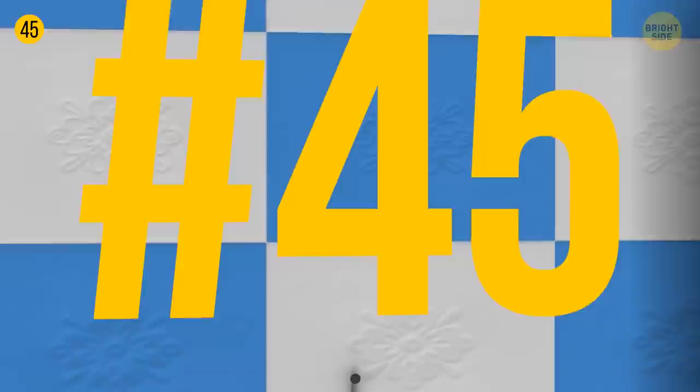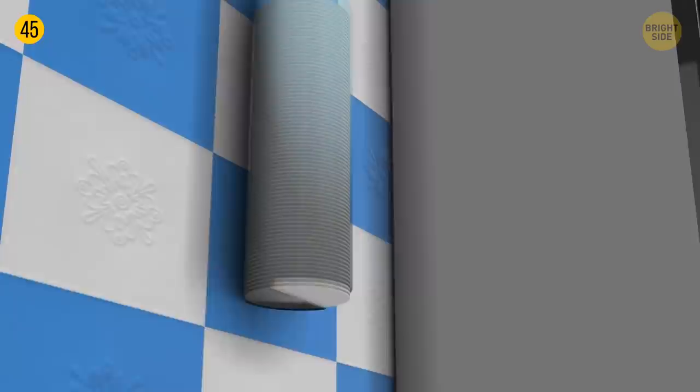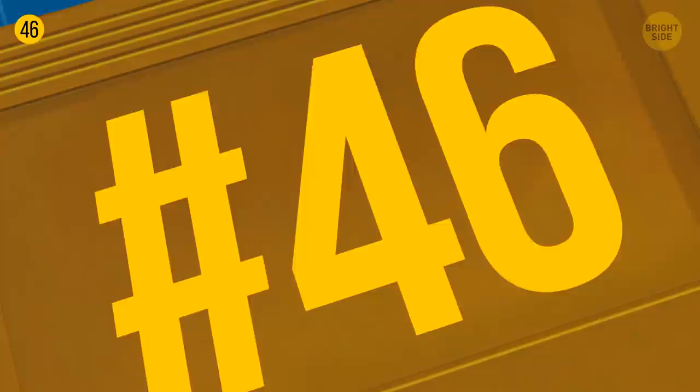A cotton pads pack has those strings on it to hang on some hook or hold it. There is no need to untighten and tighten the pack again. Look at the bottom. It has a perforated line. Tear along it and just pull out a cotton pad from a hanging pack.